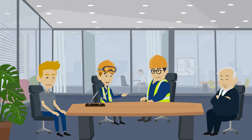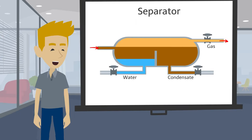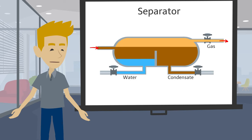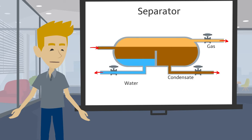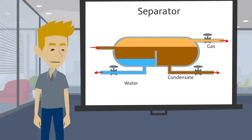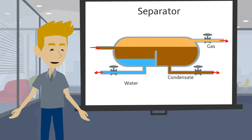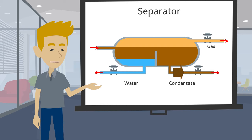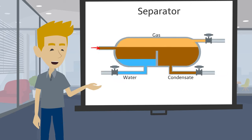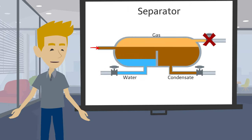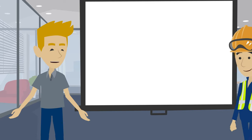Which flow path downstream of the vessel would cause an overpressure? A blockage on the water line wouldn't cause an overpressure — that line is normally closed unless the vessel needs to be drained. The same can be said for the condensate line, which has a level control valve set to open when a certain condensate level is reached. Closing either of those flow paths would just build up water and condensate in the vessel until it was carried away through the gas line. However, if the gas line were closed, the pressure could build high enough to overpressure the separator.